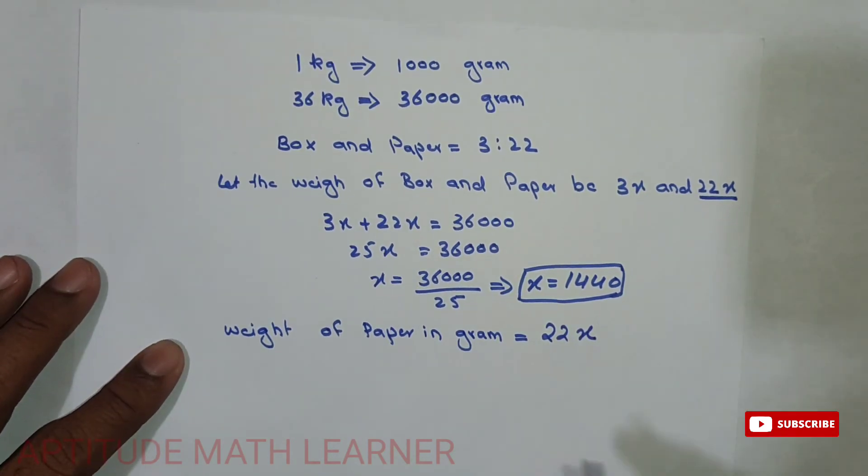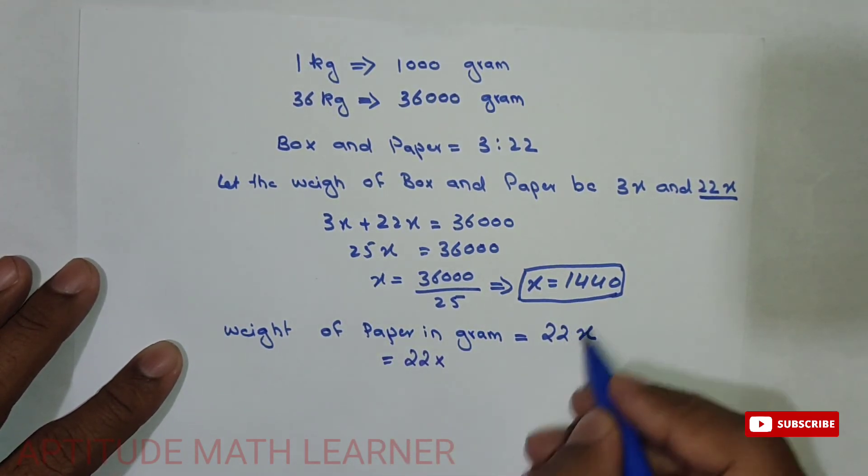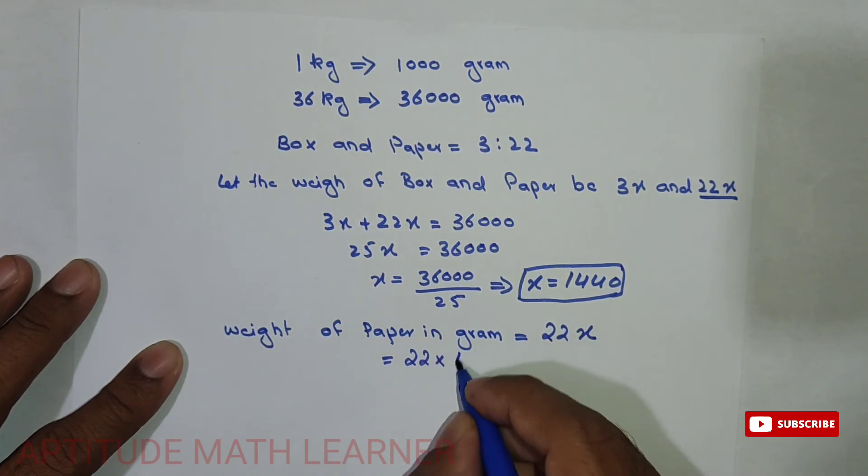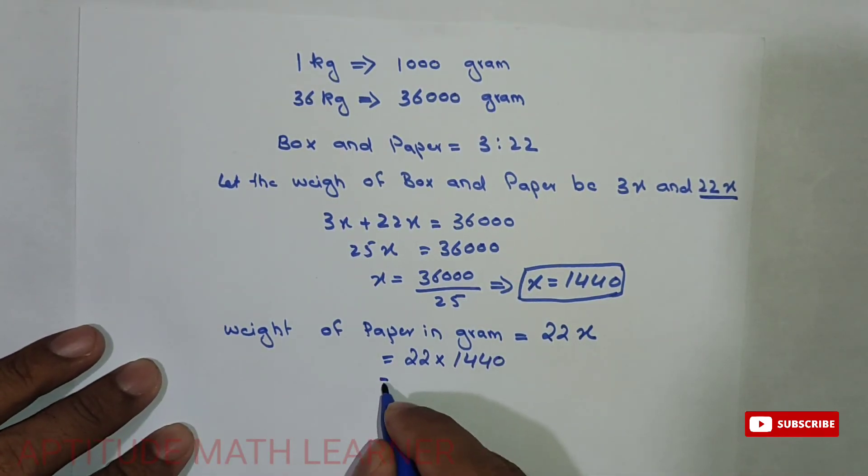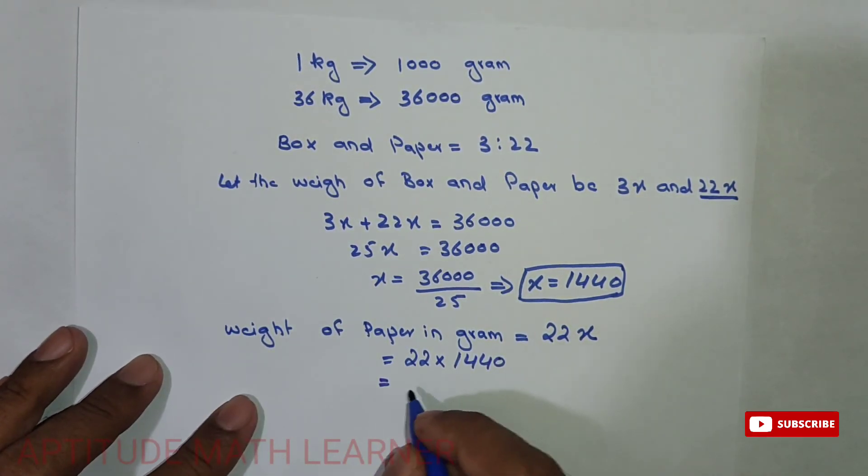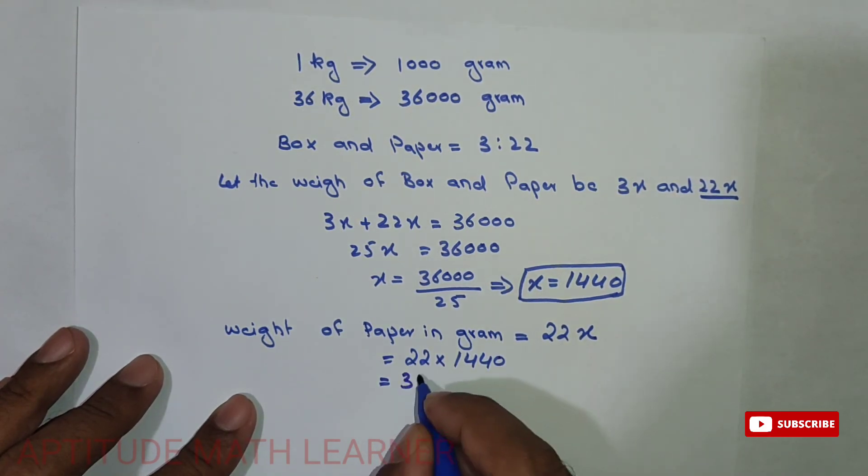So it becomes 22 multiplied by the value of x, that is 1,440. So if we multiply this, we get the answer. That is, if you calculate the above, we get here that is 31,680 grams.